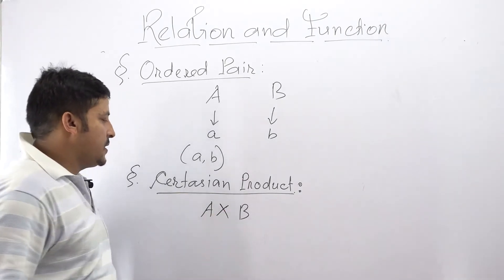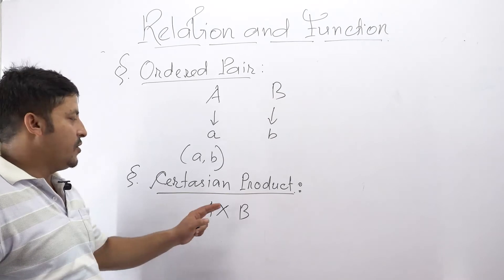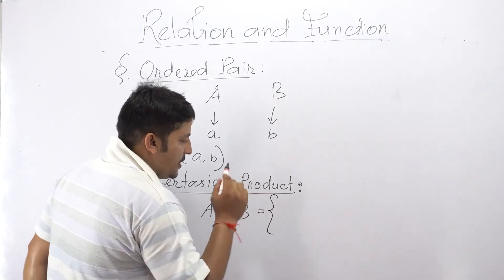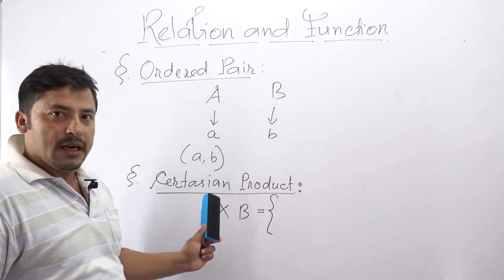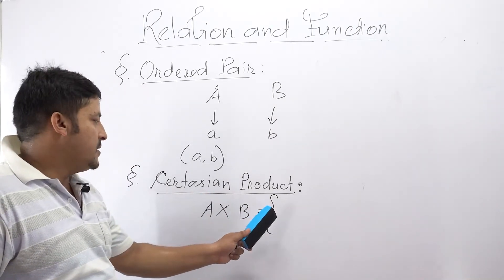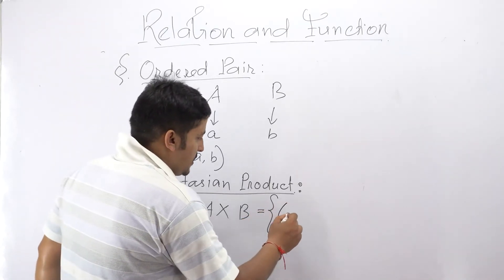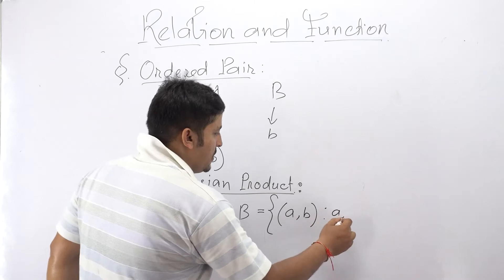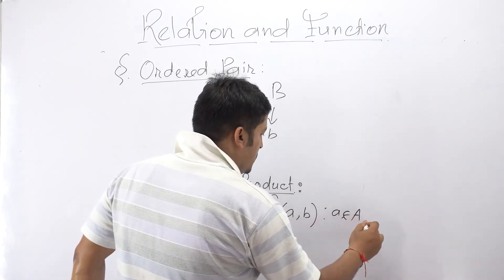Their Cartesian product is denoted by A cross B and which is itself a set that means it contains elements. Now what are the elements in this Cartesian product? In Cartesian product we have the elements as ordered pairs.